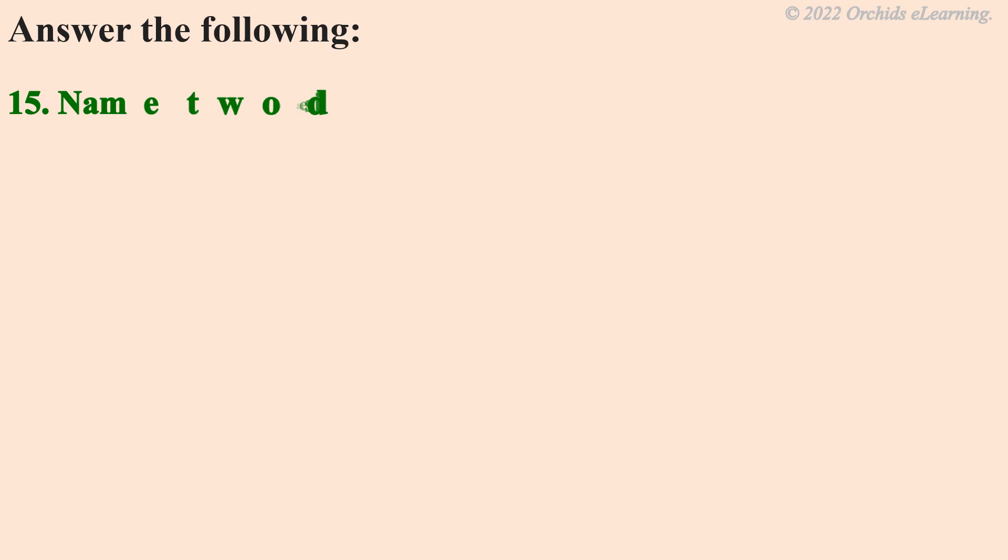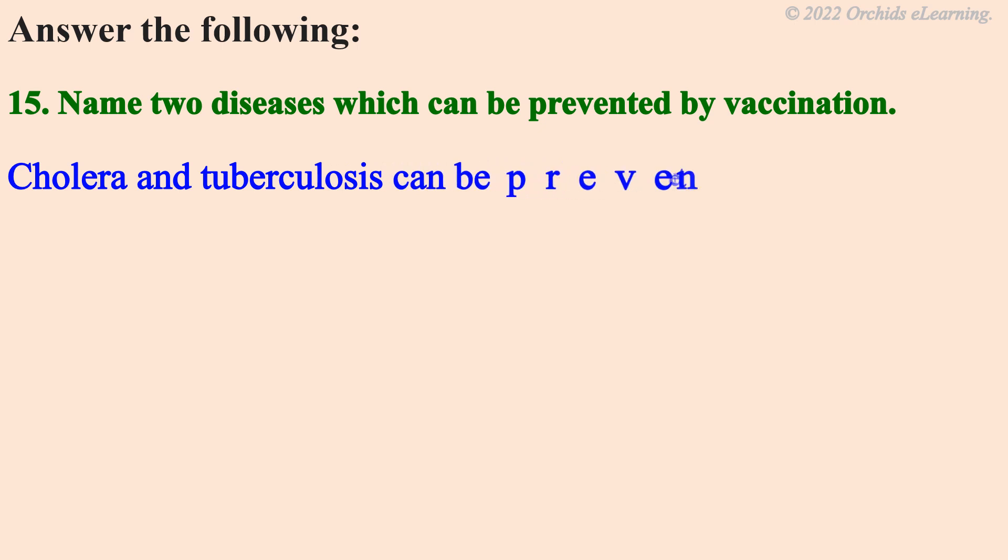Name two diseases that can be prevented by vaccination. Cholera and tuberculosis can be prevented by vaccination.